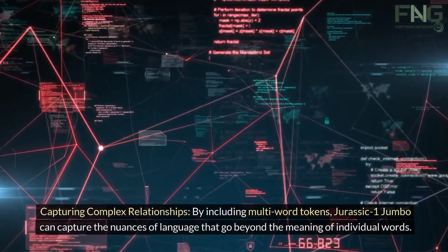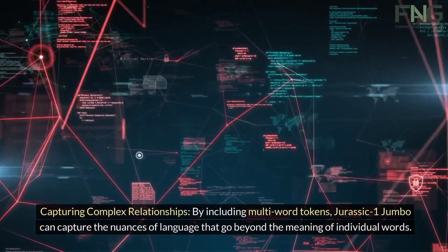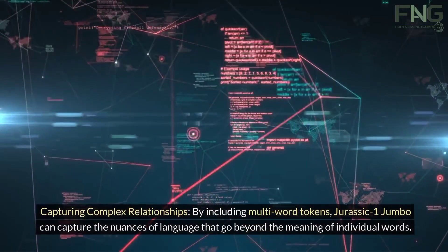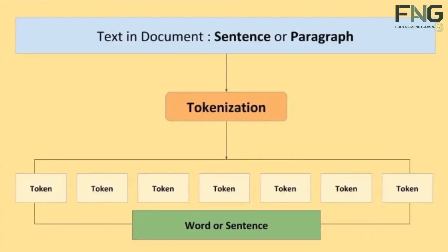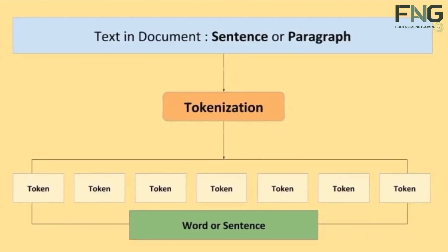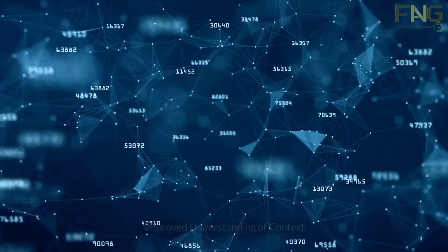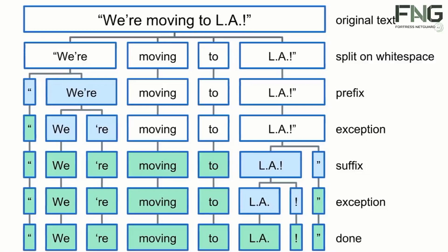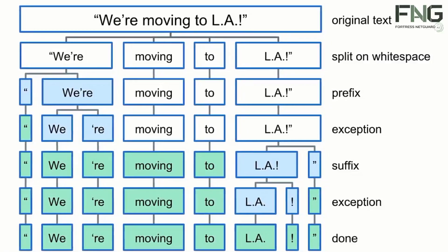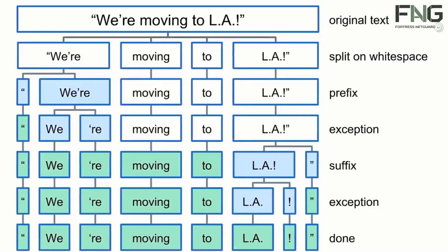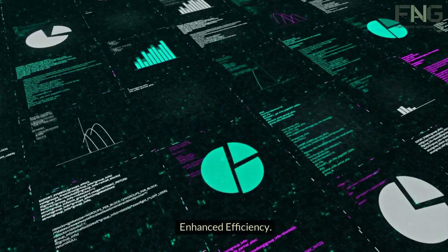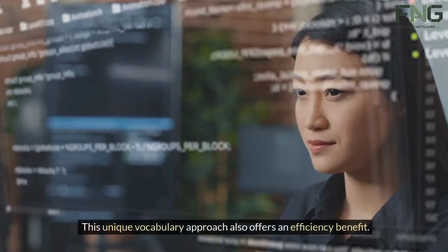Benefits of multi-word tokens: By including multi-word tokens, Jurassic-1 Jumbo can capture the nuances of language that go beyond the meaning of individual words. For example, the multi-word token 'New York City' carries more meaning than just 'New,' 'York,' and 'City' separately. Multi-word tokens allow Jurassic-1 Jumbo to understand the context of a sentence more effectively. The model can recognize how phrases are used together and how they influence the overall meaning.